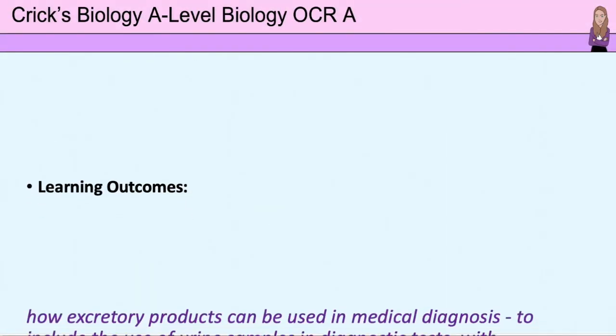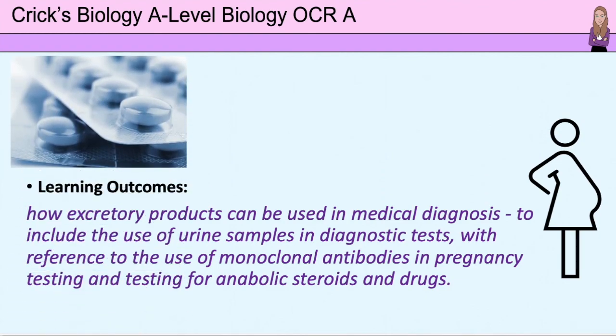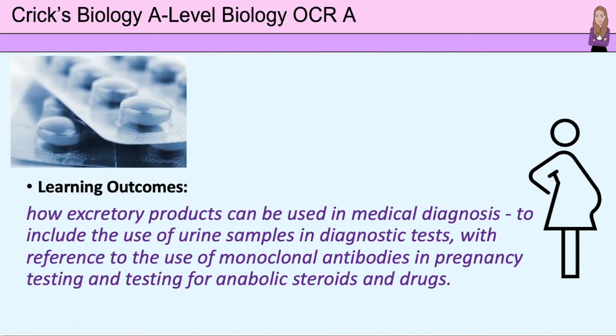So there we have it, how urine samples can be used in diagnostic tests, looking at the use of monoclonal antibodies in pregnancy testing, and testing for anabolic steroids and drugs. Hopefully you found it useful.